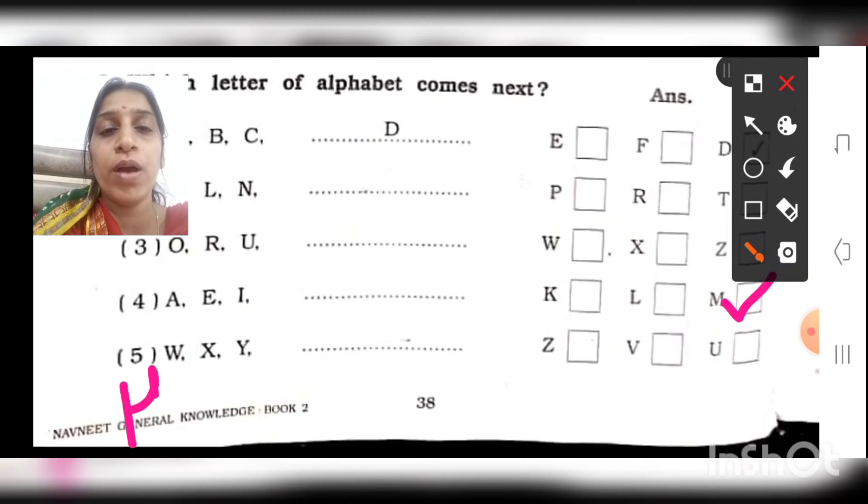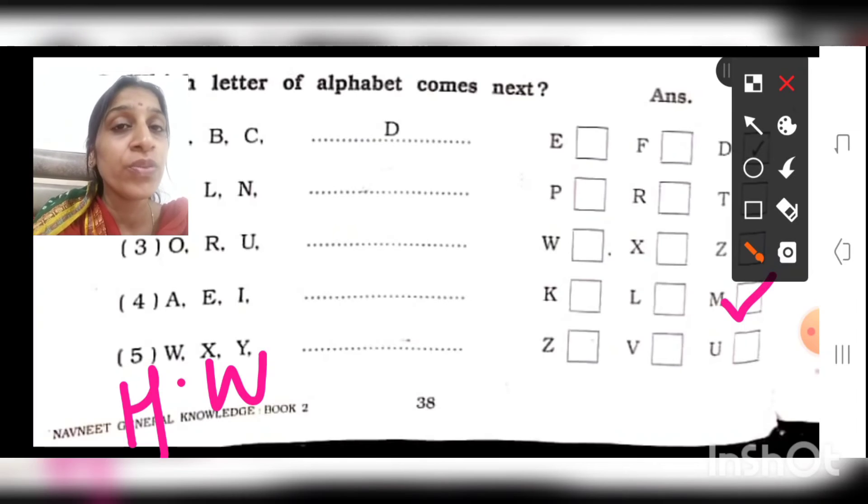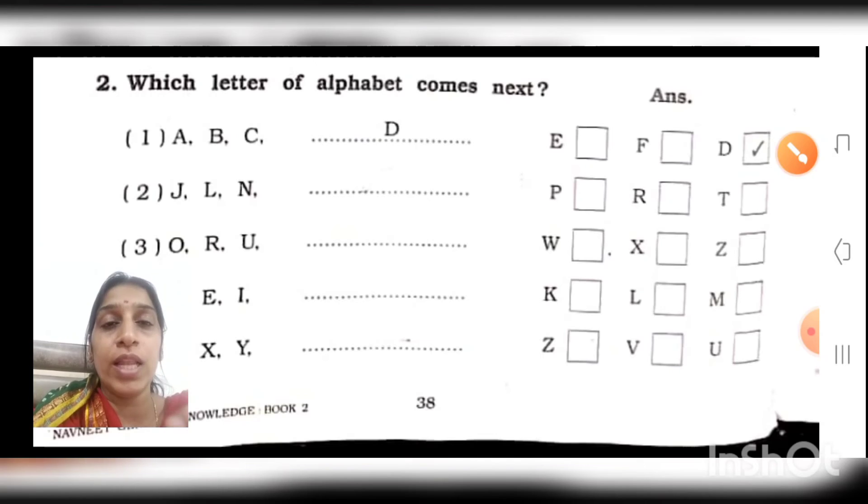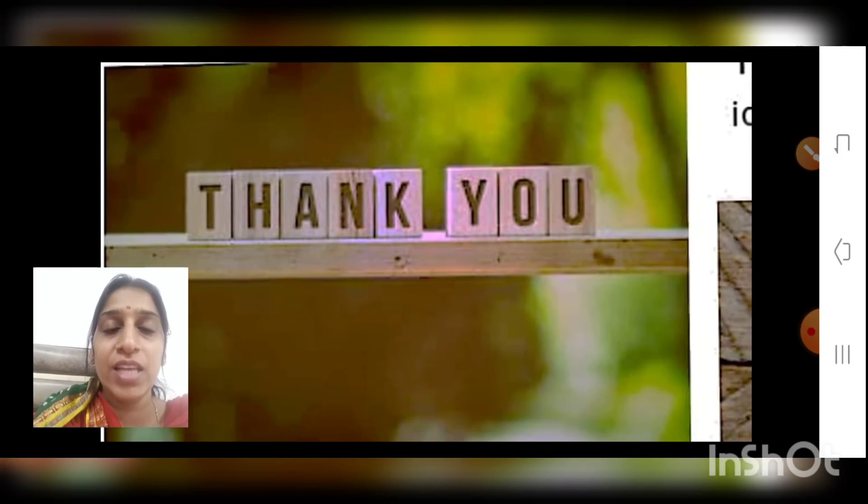The fifth one you will do on your own. That much you can do. Very easy, isn't it? We have to focus on the letters and how much gap is there. Then we have to count properly and choose the correct answer. We have to put it in this blank. I will send you the PDF. From that you can copy and write in your GK textbook. Take care, have a nice day, and please do the reading practice also. Thank you.